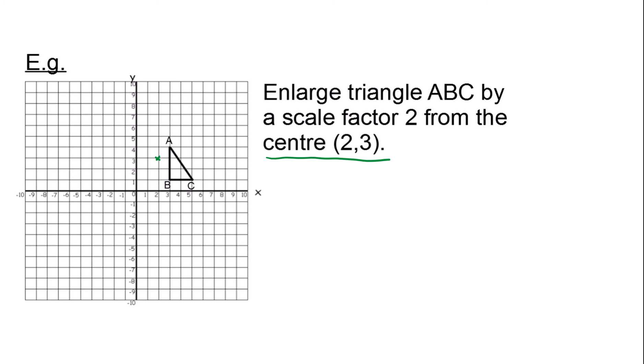You need to count from the centre of enlargement to each of the vertices. I'll call the centre O. From O to A, I have gone one step to the right and one step up — you can write that as a column vector: one right and one up. From O to B, I've moved one step to the right and two steps down. From O to C, I'm moving three steps to the right and two steps down.